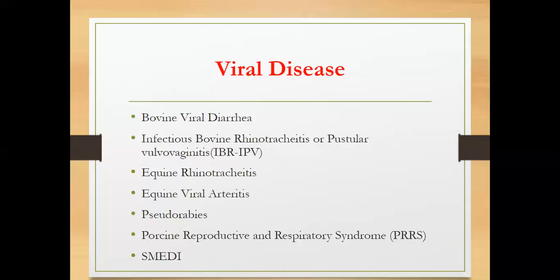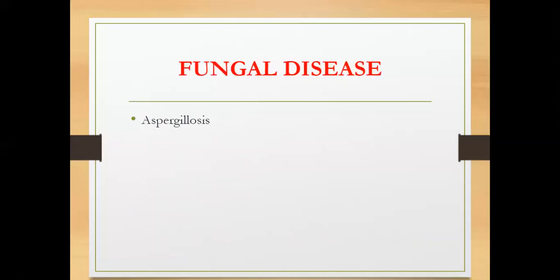Regarding diagnosis in the field, you base it on what you have observed. For example, if most piglets born from an abortion are mummified, you already have an idea of what it is. There are also test kits available, which you will learn about later in immunology. For fungal disease, we have aspergillosis, which causes mycosis. The affected species are cattle, and the primary suspect is Aspergillus fumigatus, though Aspergillus abscedent and A. niger are also implicated.